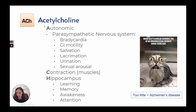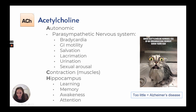Acetylcholine — remembered with A, C, and H — involves our autonomic parasympathetic nervous system: bradycardia, GI motility, salivation, lacrimation, urination, and sexual arousal. It also controls muscle contraction and is involved in the hippocampus for learning, memory, wakefulness, and attention. Too little acetylcholine leads to Alzheimer's disease — like acetylcholine reminding you of an embarrassing moment seven years ago, because it's your memory.